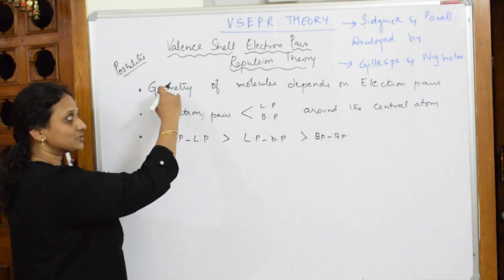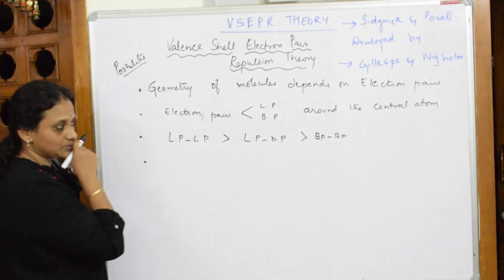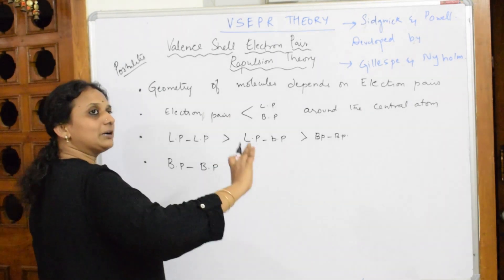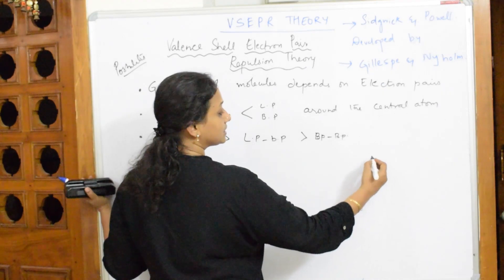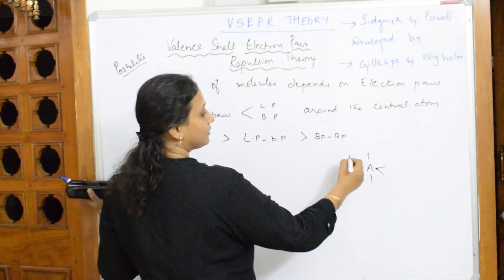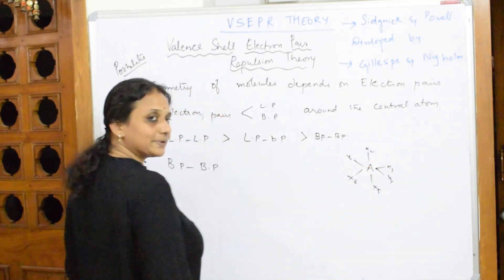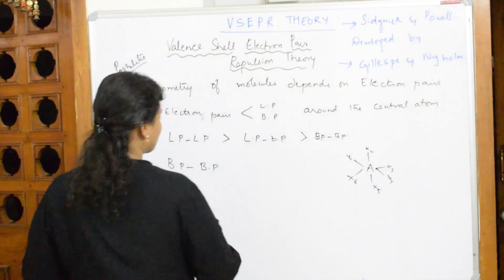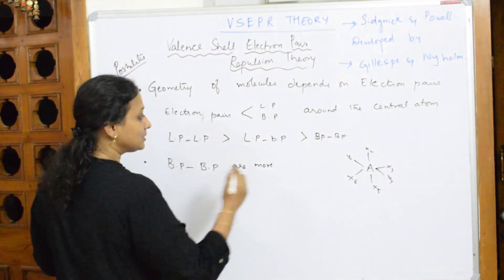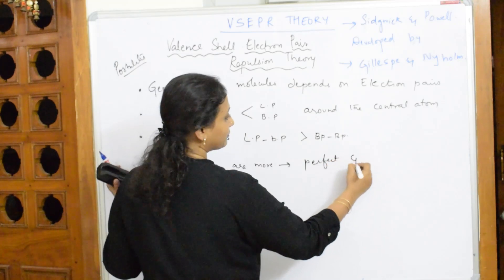In your exam answers, start with geometry, link it to electron pairs, then give the repulsion order, then discuss positions and preferences. If a molecule has more bond pairs — for example, x₁, x₂, x₃, x₄, x₅, x₆ all bonded — with no lone pairs or free electrons, then that molecule will possess a perfect geometry and a perfect shape.